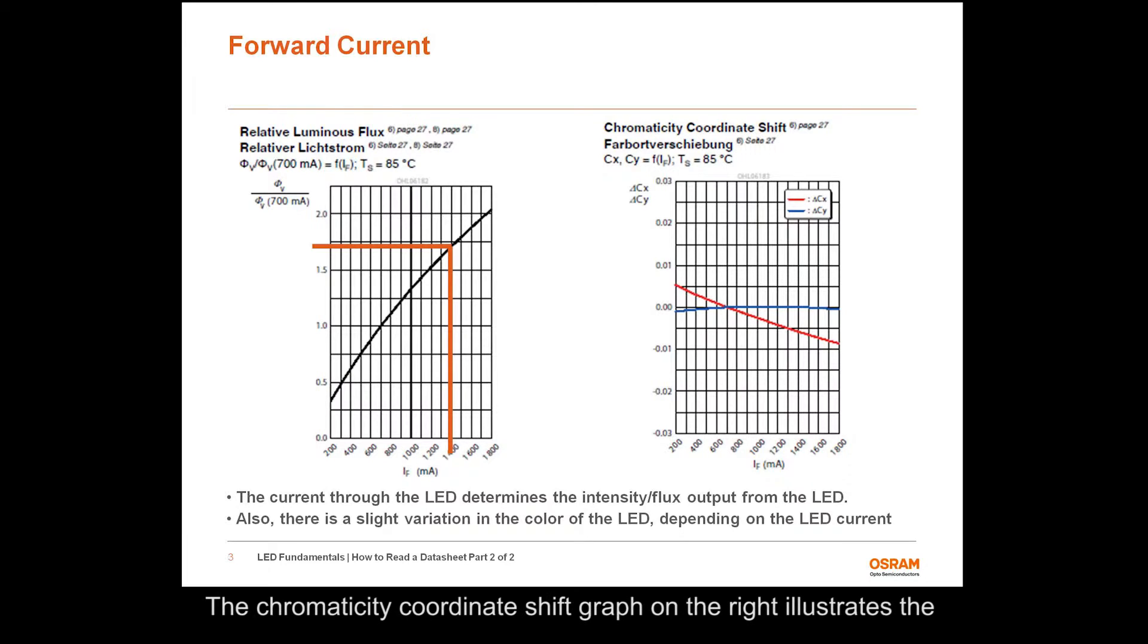The chromaticity coordinate shift graph on the right illustrates the change in the chromaticity coordinates with respect to forward current. The values on the y-axis represent the change in CX and CY from the values at the binning current, at a constant solder point temperature of 85 degrees C. For example, the value of CY shows no shift and CX decreases by approximately 0.005 at 1400 milliamps from the values at 700 milliamps.